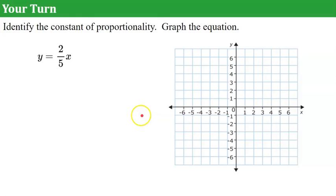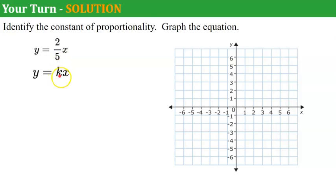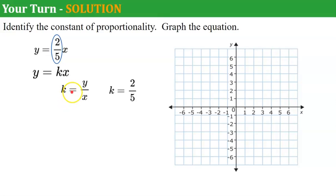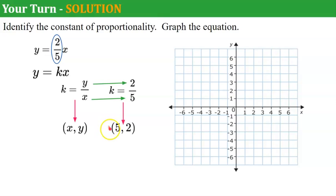Your turn. Pause, identify the constant of proportionality, graph the equation, and come back when you're ready. Welcome back. The constant of proportionality is the value multiplied by X when solved for Y — here it's 2 fifths. Since K equals 2 fifths is a ratio of Y to X, that means Y is 2 and X is 5, giving us the ordered pair (5, 2). Plot the origin, then plot (5, 2), connect with a line, and there is the graph of Y equals 2 fifths X.